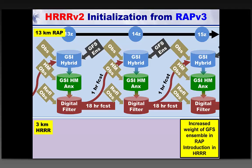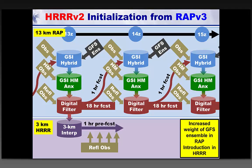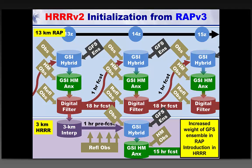In the Rapid Refresh and HRRR, these are hourly cycled systems using GSI for data assimilation, where we bring in hydrometeor observations including precipitating observations from radar reflectivity after other conventional observations are assimilated. We apply radar reflectivity as a forcing function during the filtering process in the 13-kilometer RAP. In the HRRR, we bring in radar reflectivity observations as a similar forcing function in four 15-minute steps over one pre-forecast hour before generating our final analysis.